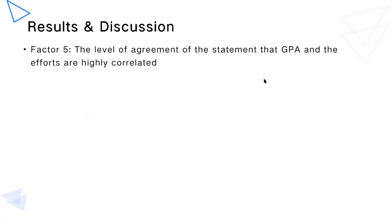The fifth factor is the level of agreement with the statement that a student's GPA is highly correlated to the effort they put into study. This factor is significant in predicting career maturity, but whether the relationship is positive or negative is not confirmed because the confidence interval of the coefficients can be either positive or negative. This might be explained by the fact that students can misunderstand their own effort, since effort is too subjective to measure.